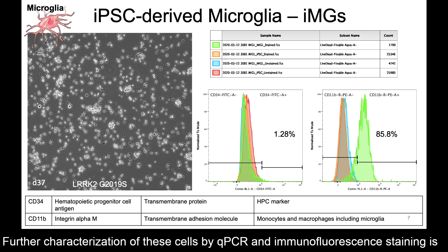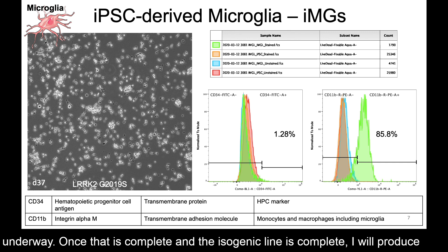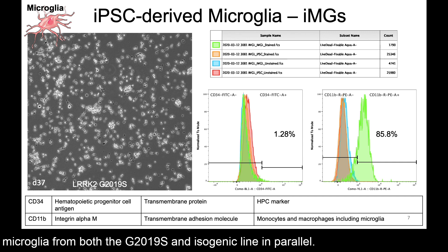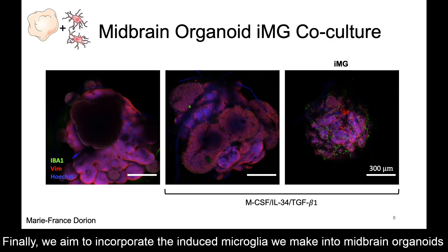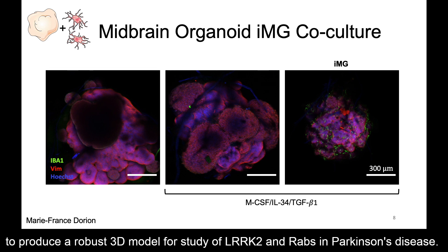Further characterization of these cells by qPCR and immunofluorescent staining is underway, and once that is complete and the isogenic line is complete, I will produce microglia from both the G2019S and the isogenic line in parallel. Finally, we aim to incorporate the induced microglia that we make into midbrain organoids to produce a robust 3D model for study of LRRK2 and RABs in Parkinson's disease.